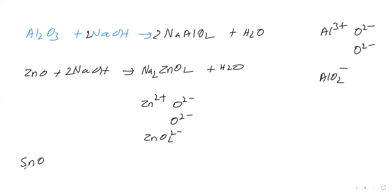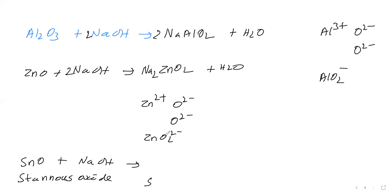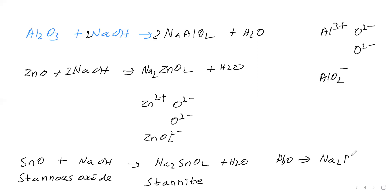For SnO (stannous oxide, Sn²⁺), reaction with NaOH gives Na₂SnO₂ — sodium stannite — plus water. For PbO (plumbous oxide, Pb²⁺), reaction with NaOH gives Na₂PbO₂ — sodium plumbite — plus water. Lead's Latin name is plumbum, so plumbite. Plus 2 is the lower oxidation number, so plumbous oxide.